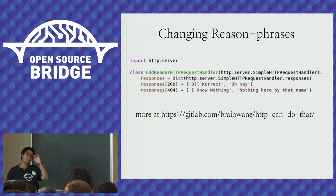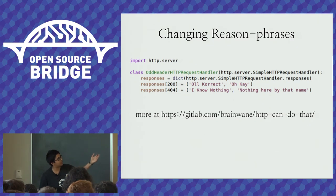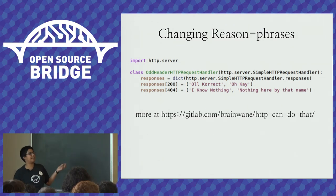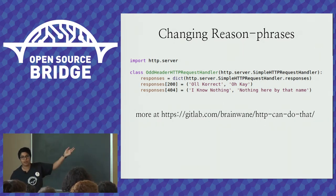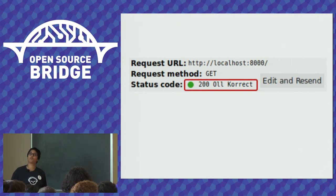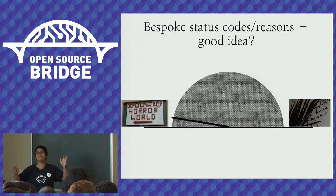If you wanted to change the reason phrases your server emits, you could. In Python 3 — because we've gotten later in the talk — you import http.server, subclass the base server, and then change the responses dictionary. There's a short and long reason phrase. Here I changed 200 from 'OK' to 'All Correct' — which is apocryphally the origin of OK. And indeed, getting something returned '200 All Correct' in my browser. This is a terrible idea — don't break language.